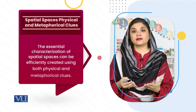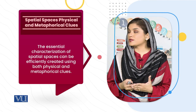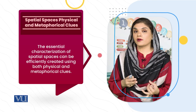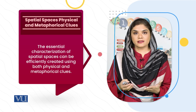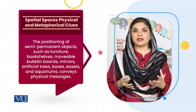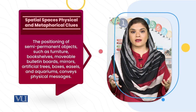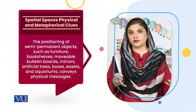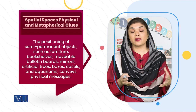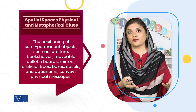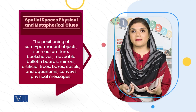There are important physical and metaphorical clues. For example, you can have semi-permanent furniture, a bookshelf, bulletin boards, artificial trees, easels, aquariums, or physical signage. We can use these to define each area and show how it functions.